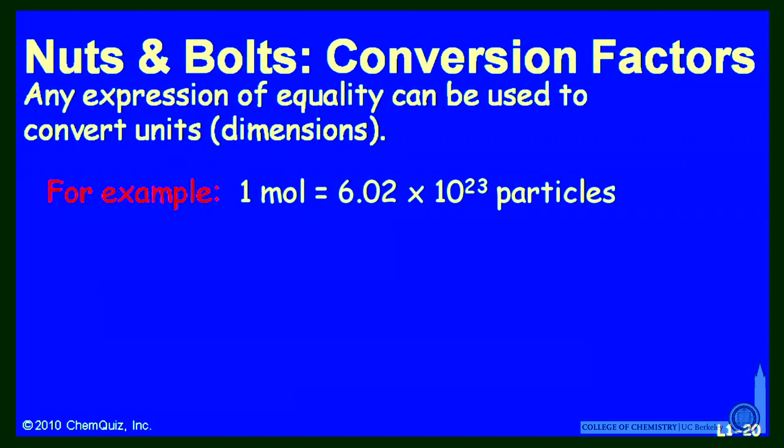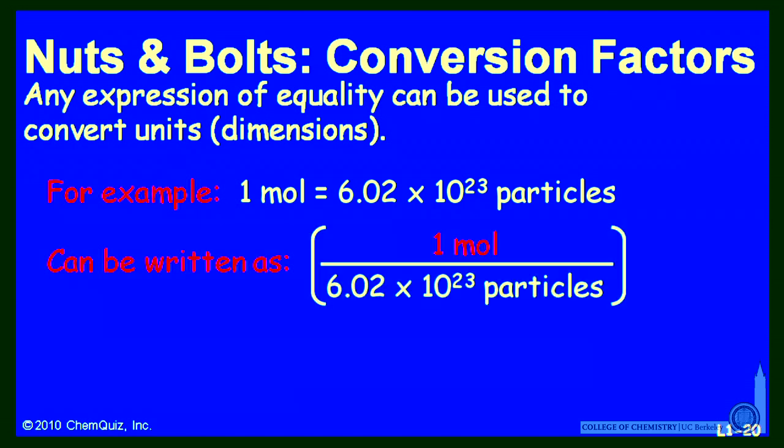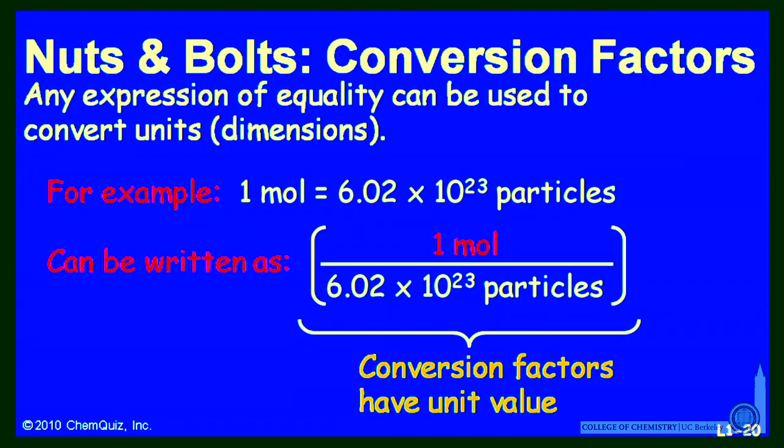For instance, 1 mole equals 6.02 times 10 to the 23rd particles. Those are equal. I can write that then as 1 mole over 6.02 times 10 to the 23rd particles, dividing through on both sides by 6.02 times 10 to the 23rd, and I'll get something that has a value of 1.